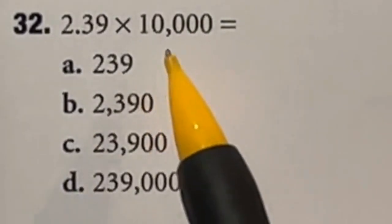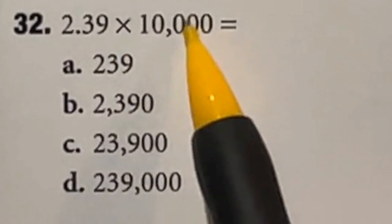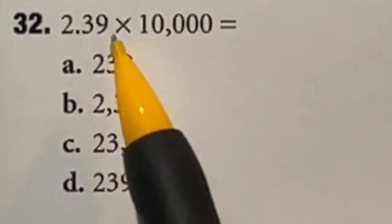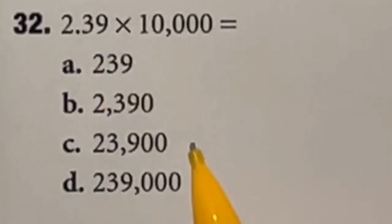So the ASVAB is all about speed. And in this case, they're seeing if you know the trick, that if you ever multiply by a multiple of 10, you just move the decimal to the right for every 0 in whatever number you're multiplying by.